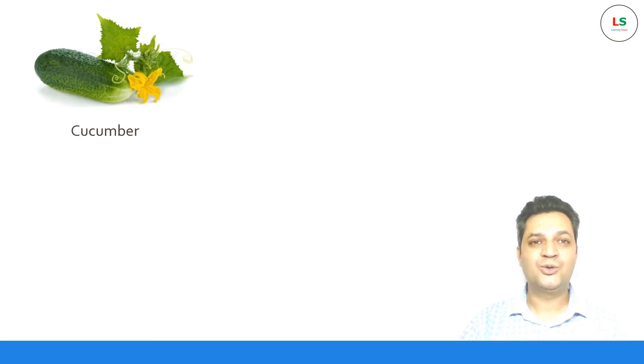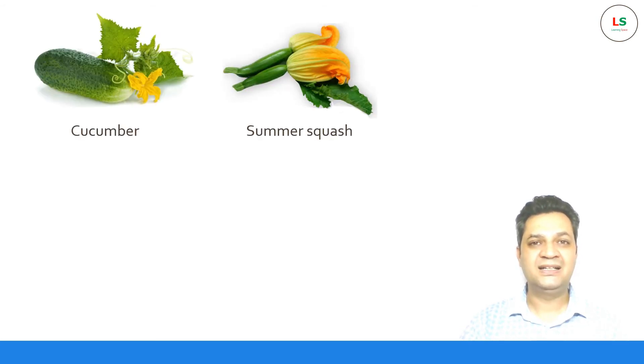Imperfect flowers are the ones which contain male or the female parts only. These flowers cannot produce seeds without the help of other flowers. Examples include cucumber, summer squash, or zucchini.